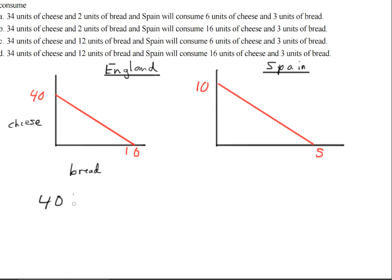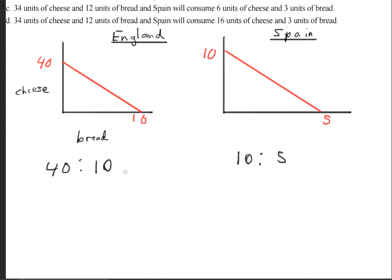So we have 40 units of cheese to 10 units of bread. We'll do the same thing over here: 10 units of cheese to 5 units of bread. Now we want to see who has the comparative advantage for bread first, so we're going to compare the values over here.